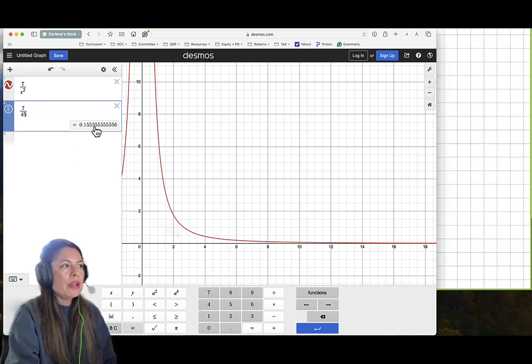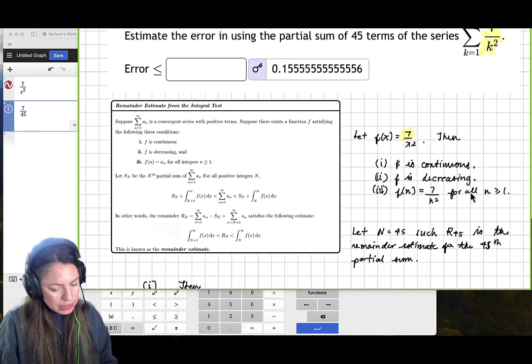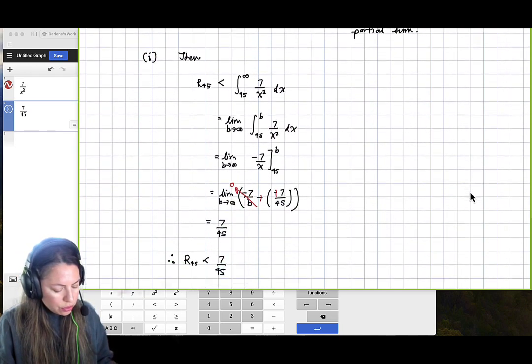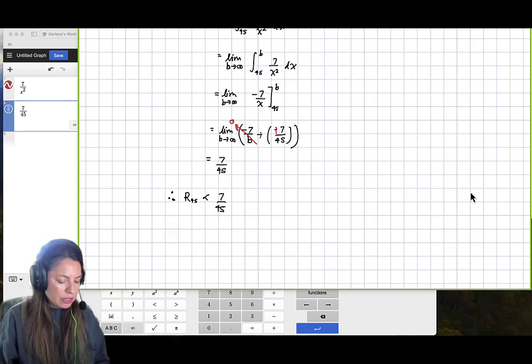If I scroll up, we see that this is the correct answer. We don't usually write it in decimal form if it doesn't ask us, and especially if it's irrational.